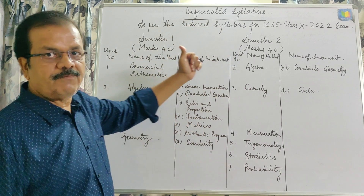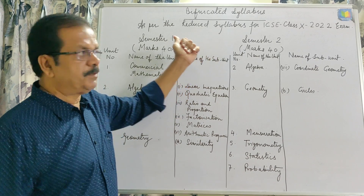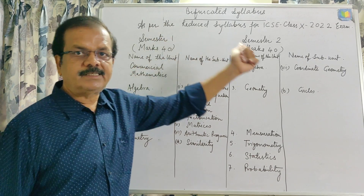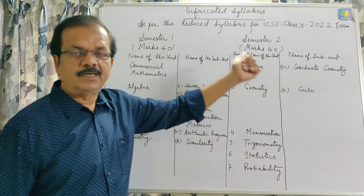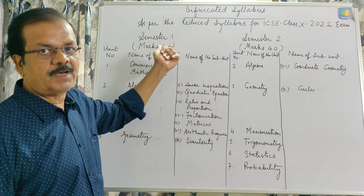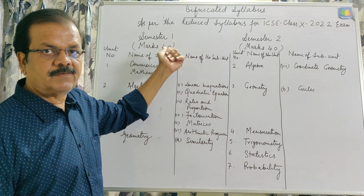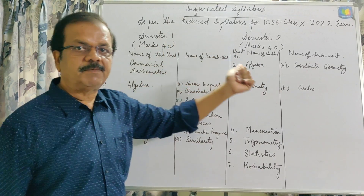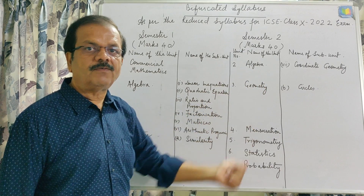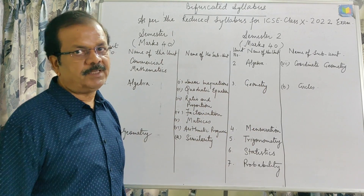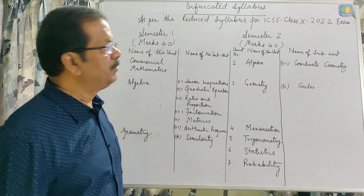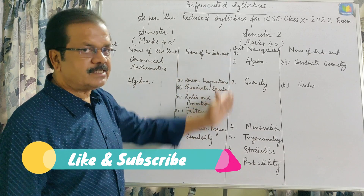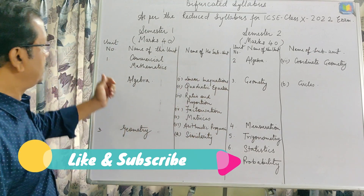The exam will now be held in two semesters: first semester and second semester. The first semester will be of 40 marks and will be MCQ type. The second semester will also be of 40 marks and will be subjective type. The council has divided the entire syllabus into two parts.